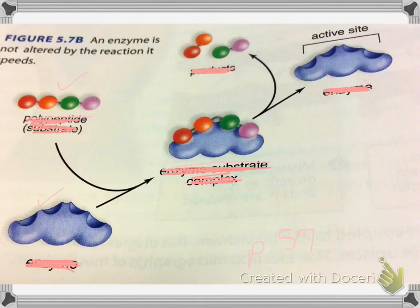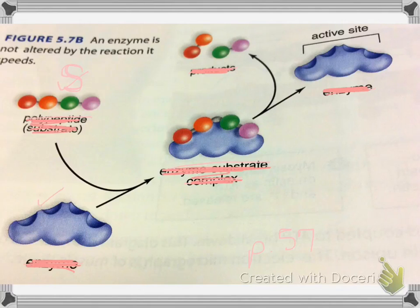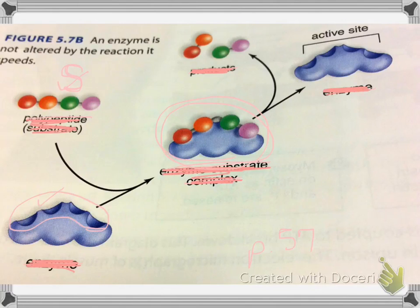Now we're looking for the substrate. What is a substrate? It's the reactant — correct. It's what you start with, so here's the substrate. The active site is right here on the enzyme — active sites are on enzymes. The enzyme-substrate complex is right there. And the molecules out here at the end are the products — substrates change into products.